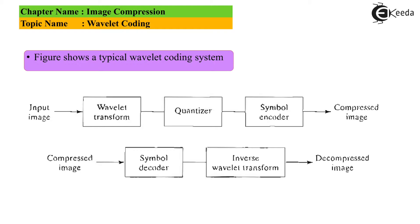Let us visualize the figure that shows a typical Wavelet coding system. The figure has two parts. The first three blocks on the upper side form figure A, going from the input image to the compressed image. Figure A shows the input image provided first to the Wavelet transform block, where Wavelet coefficients are computed, then a quantization process is applied, and finally coding with the help of a symbol encoder is done to obtain the compressed image.